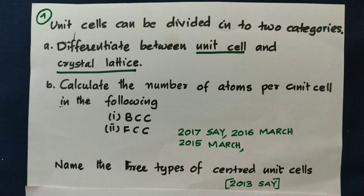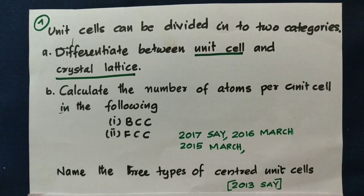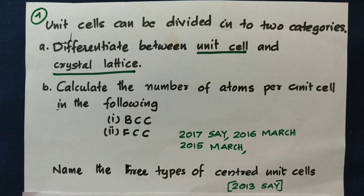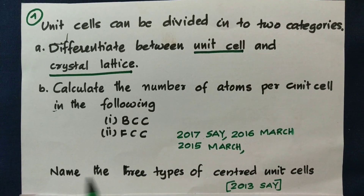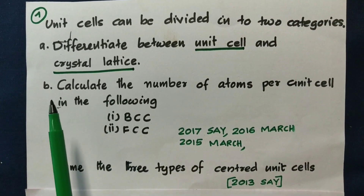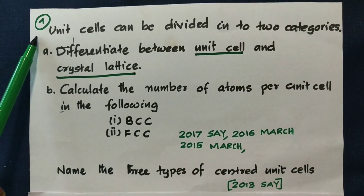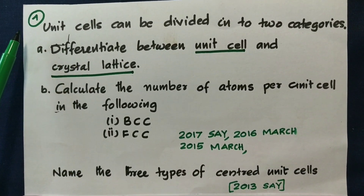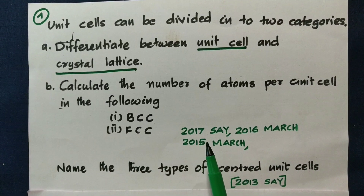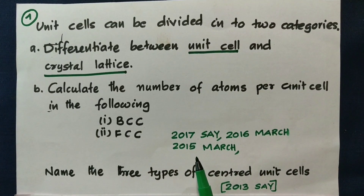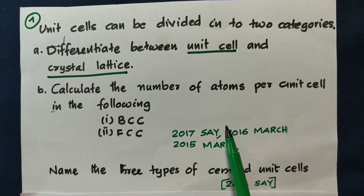Hi students, today we are going to study chemistry in this chapter. What we are going to study is unit cell and crystal lattice — these are two important points. This is page number 7. This is the first part of the exam and this is how I am going to study the exam.